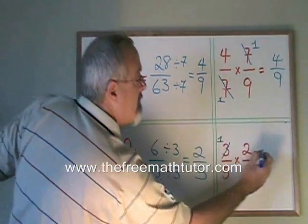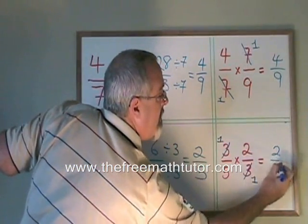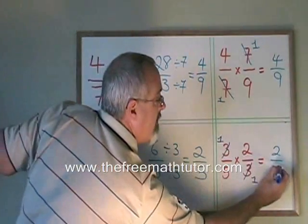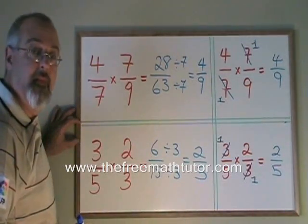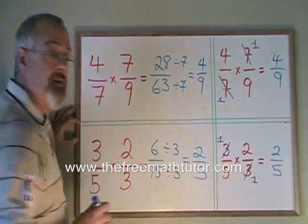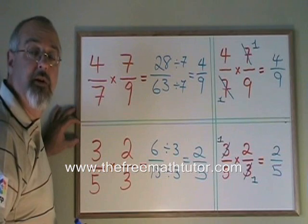Now I have 1 times 2 on the top and 5 times 1 on the bottom. I have the answer 2 fifths. It is the same answer. Canceling allowed me to get the correct answer without having to reduce the fraction at the end.